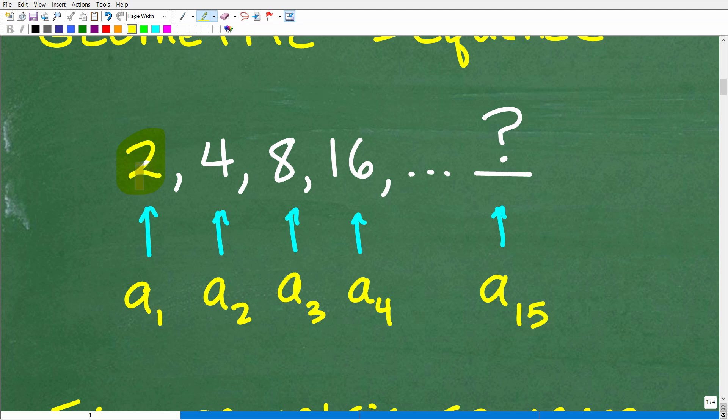2 is our first term of a geometric sequence. In mathematics, we use subscripts. You have superscripts like a squared with the little 2 up here, that's an exponent. If I write something like a sub 2, this is what we call a subscript, and it defines the position. So a sub 1 is the first term of this geometric sequence, and it is 2.